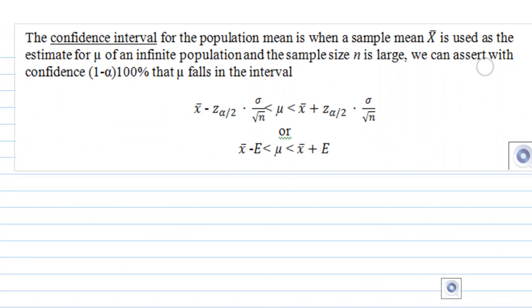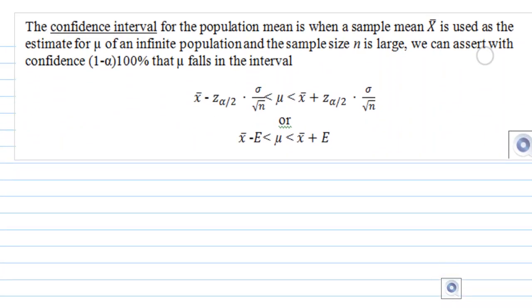First, let's recall how to find the confidence interval for the population mean. With a confidence of (1 - α) × 100%, the mean μ falls in the interval: x̄ - z_{α/2} × (σ/√n) to x̄ + z_{α/2} × (σ/√n).